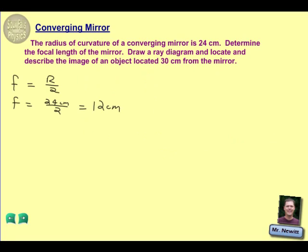Now once we have that focal length, we can start diving into what's happening in the situation here. It says for us to draw a ray diagram and locate and describe the image of an object that's located 30 centimeters from the mirror. The first thing we'll want to do is figure out, now that we know the focal length, is to figure out where the image is actually going to be located.